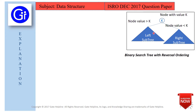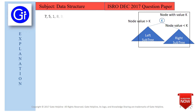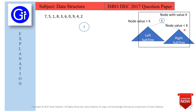The given numbers are 7, 5, 1, 8, 3, 6, 0, 9, 4, 2. We start with the first node: 7 becomes the root. Next is 5. Since 5 is less than 7, and in reversal ordering smaller values go to the right subtree, 5 goes to the right of 7.